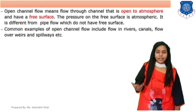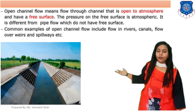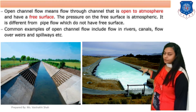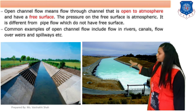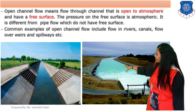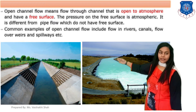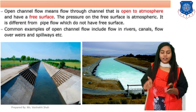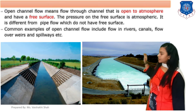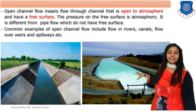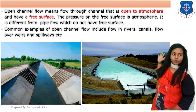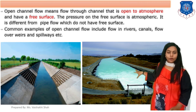Common examples of open channel flow include rivers, canals, flow over weirs, spillways, etc. As you can see in the diagram, this stream is open to atmosphere with no closed surface, so this flow is called open channel flow. Similarly, a canal or channel constructed and open to atmosphere is another basic example. Clearly, open channel flow means flow which is open to atmosphere.